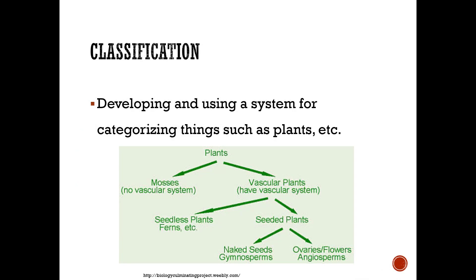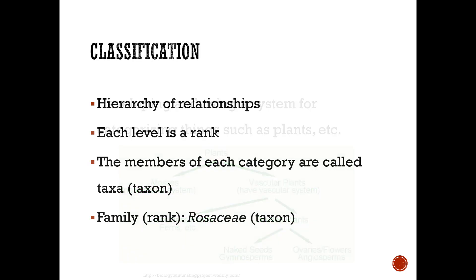With classification, you're developing and using a system for categorizing things such as plants. Mosses are non-vascular, while ferns and other seeded plants are considered vascular. Classification includes a hierarchy of relationships, where each level is a rank and the members of each category are called taxa or taxon. For example, family is the rank and the taxon is Rosaceae, or the rose family.